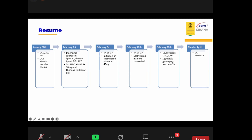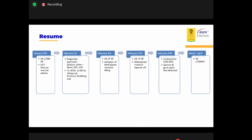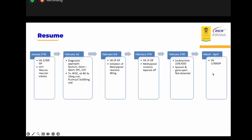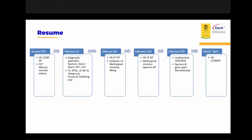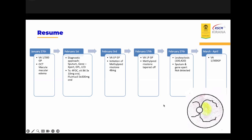The laboratory results showed leukocytosis. However, sputum and GeneXpert examination did not identify any Mycobacterium tuberculosis bacteria. Between March and April, visual acuity improved to hand movement with good projection but remained stable. During the last visit, fundoscopy showed the optic disc becoming more pale, likely with a tuberculoma. Pulmonology follow-up and fundoscopy examination were continued.